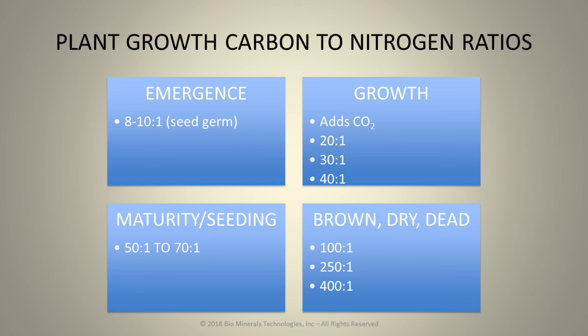And by the time it goes through the reproduction stage to produce fruits, vegetables, grains — whatever it's doing — and translocating that nutrient from the plant into the produce or grain, that carbon ratio will increase up to 100 to 1, 150 to 1, 200, and even higher.